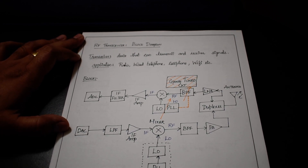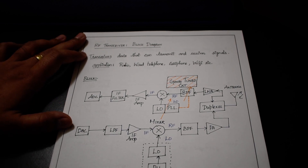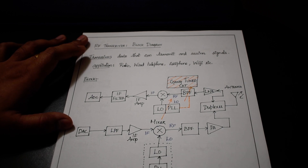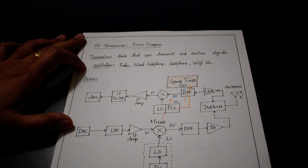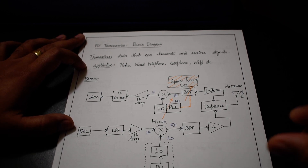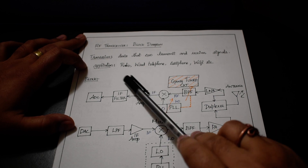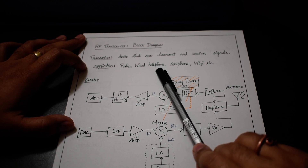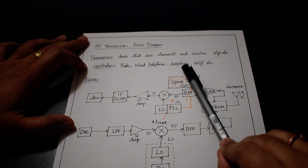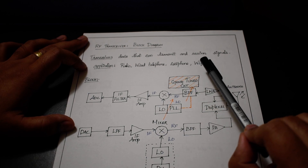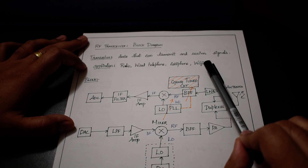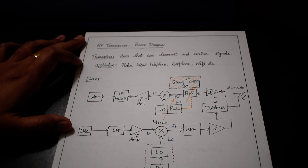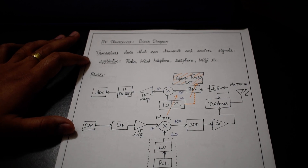So, what is a transceiver? A transceiver is basically a device that can transmit and receive signals at the same time or at different time instances. Usually, where do you see these transceivers applied in real life? You can see it on the radios, on the wired telephones we used a long time ago, on our cell phones on a daily basis, and also on the Wi-Fi modems that we use.